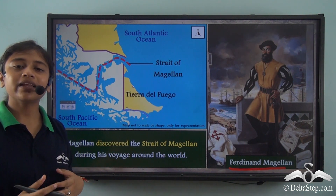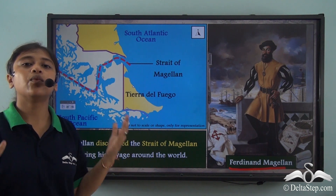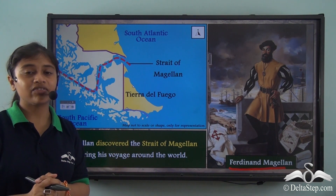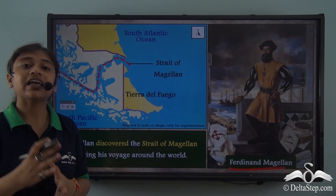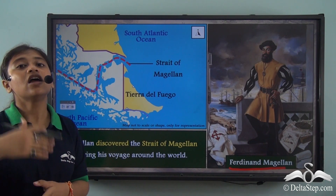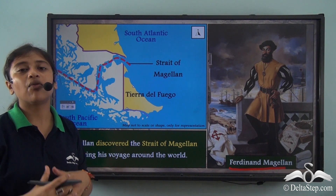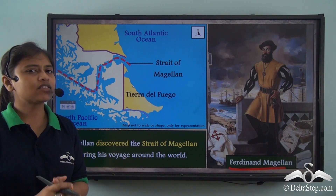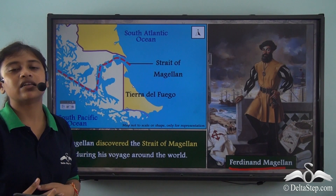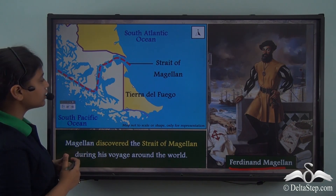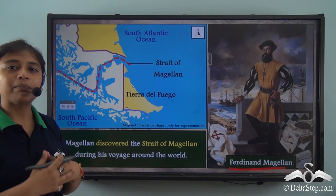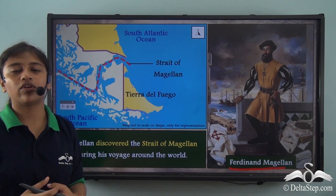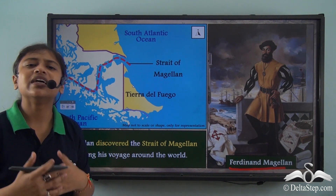The Strait of Magellan derives its name from the European explorer Ferdinand Magellan. Ferdinand Magellan was a European explorer who, on his voyage around the world, discovered that the world is round and not flat. Earlier, people used to believe that the earth is flat. After Magellan's voyage around the world, it was confirmed that the world is round. The Strait of Magellan was named after Ferdinand Magellan following his historic voyage.